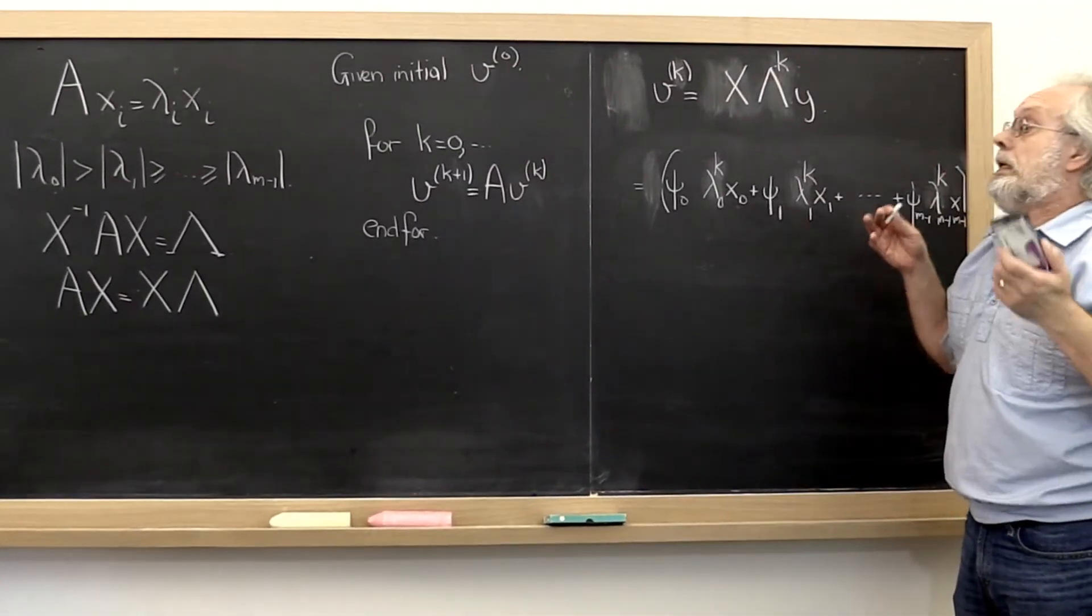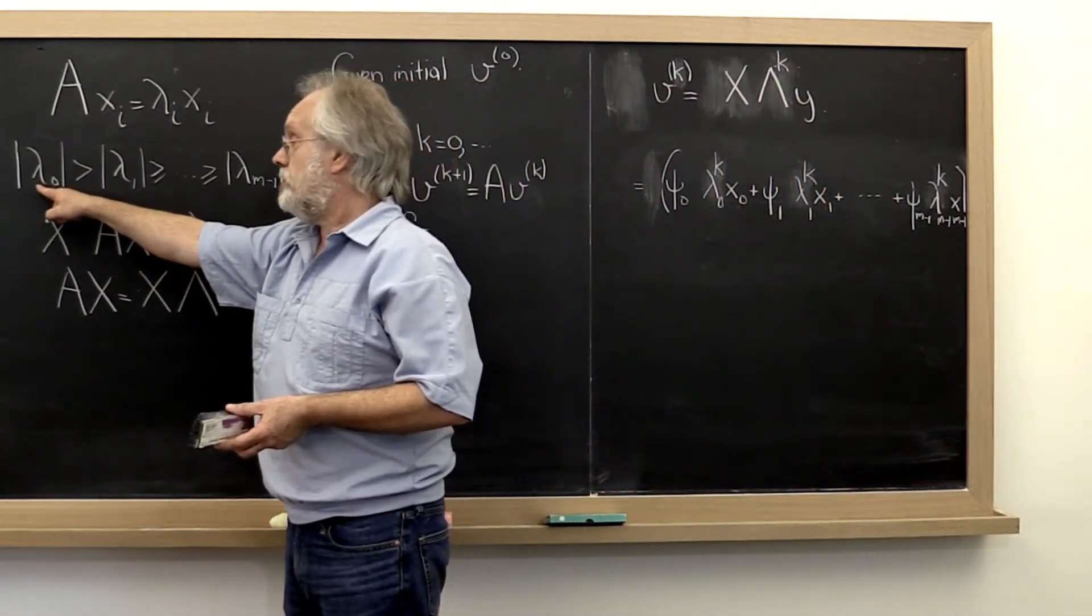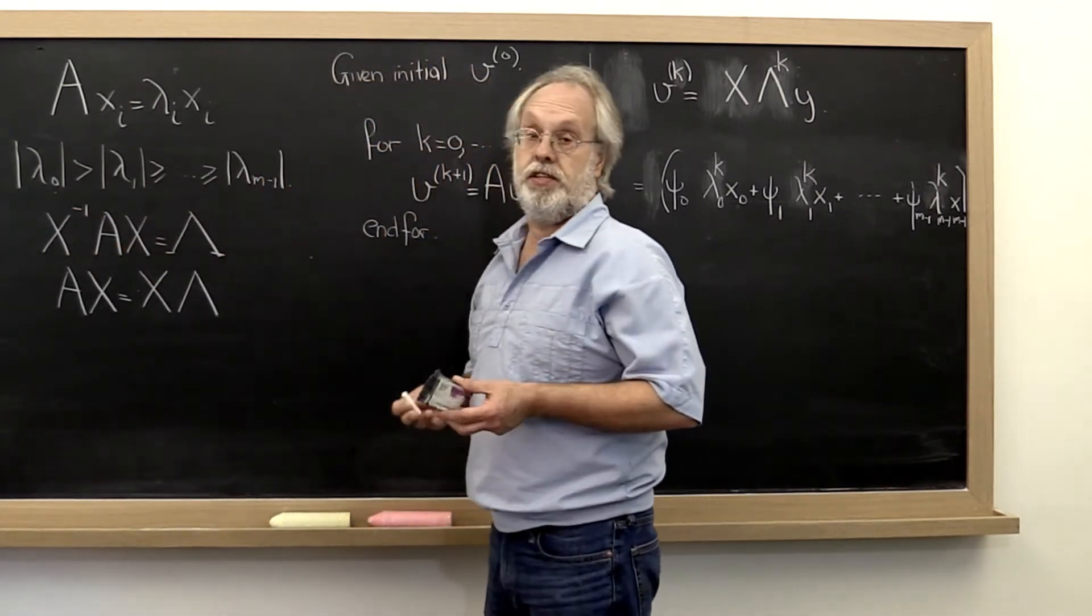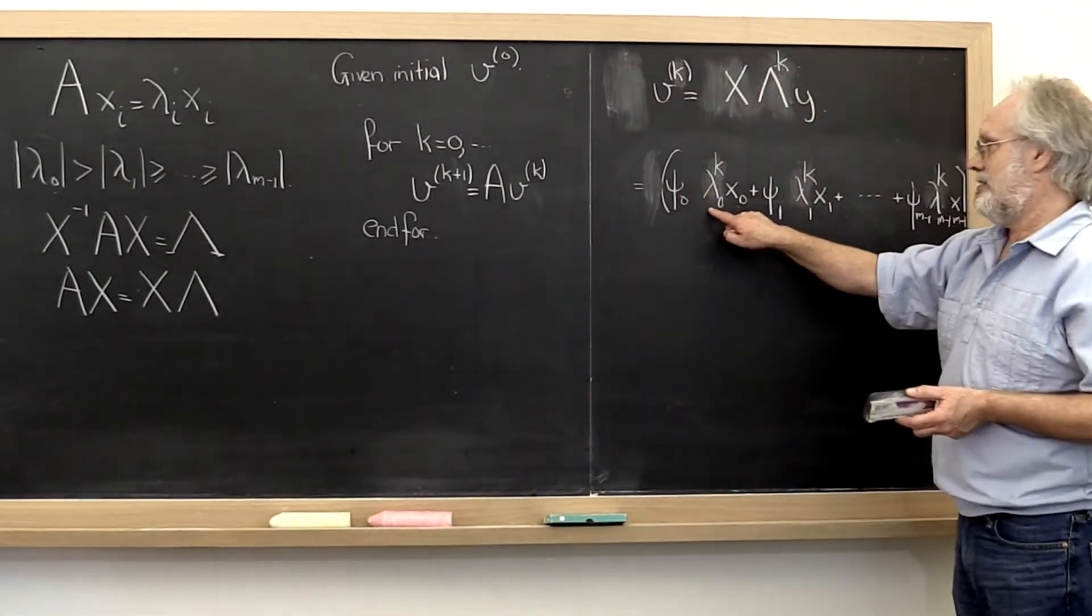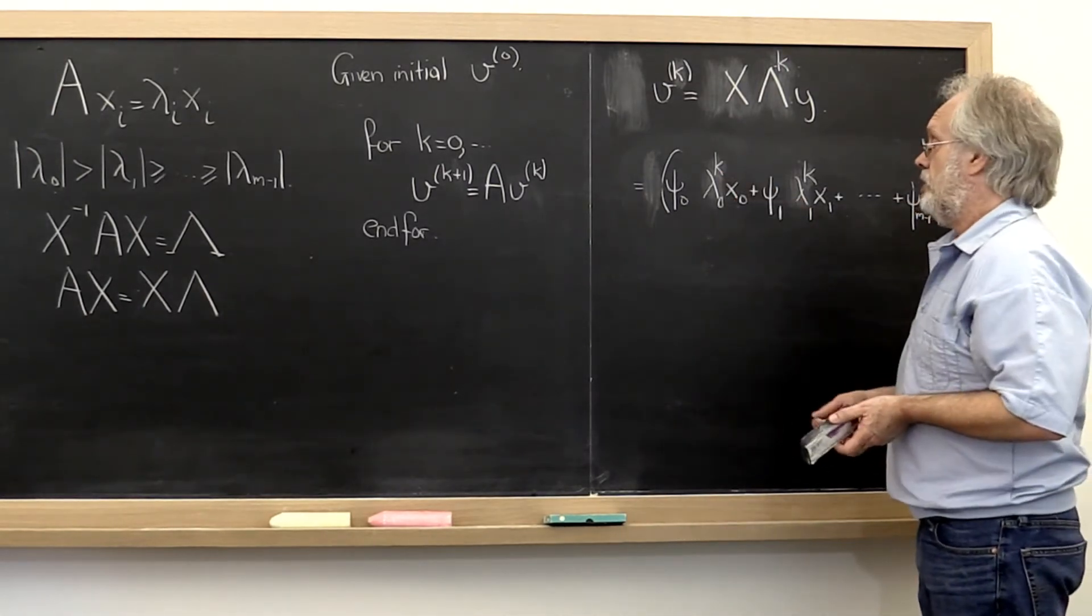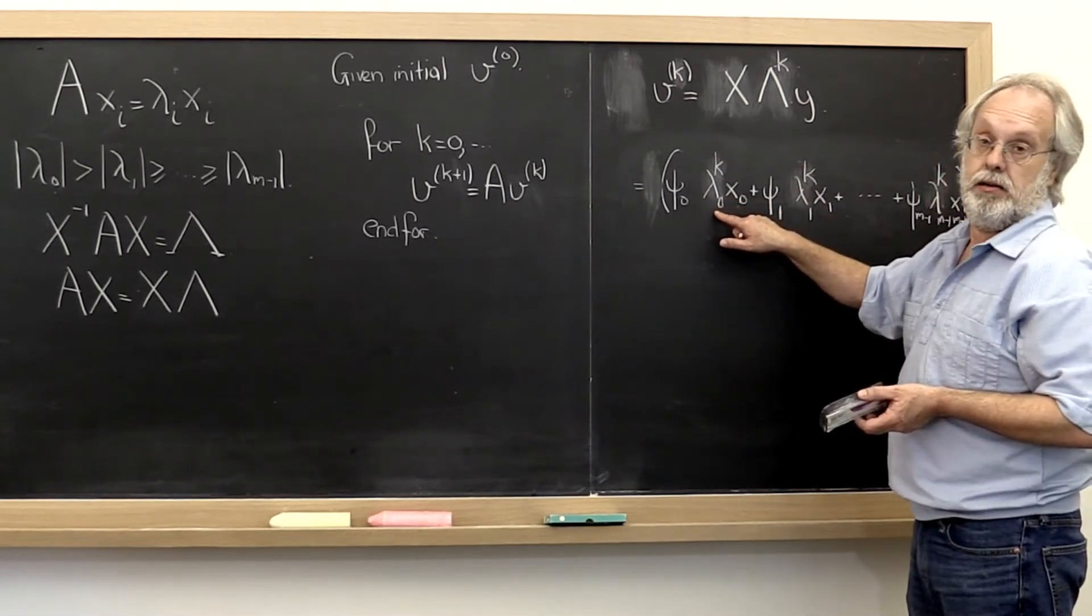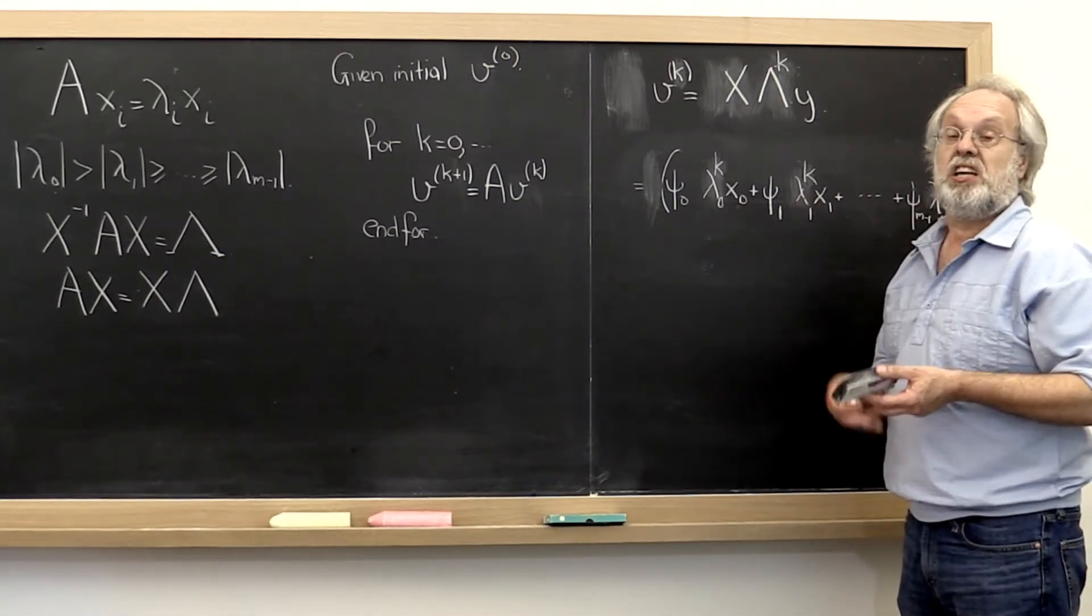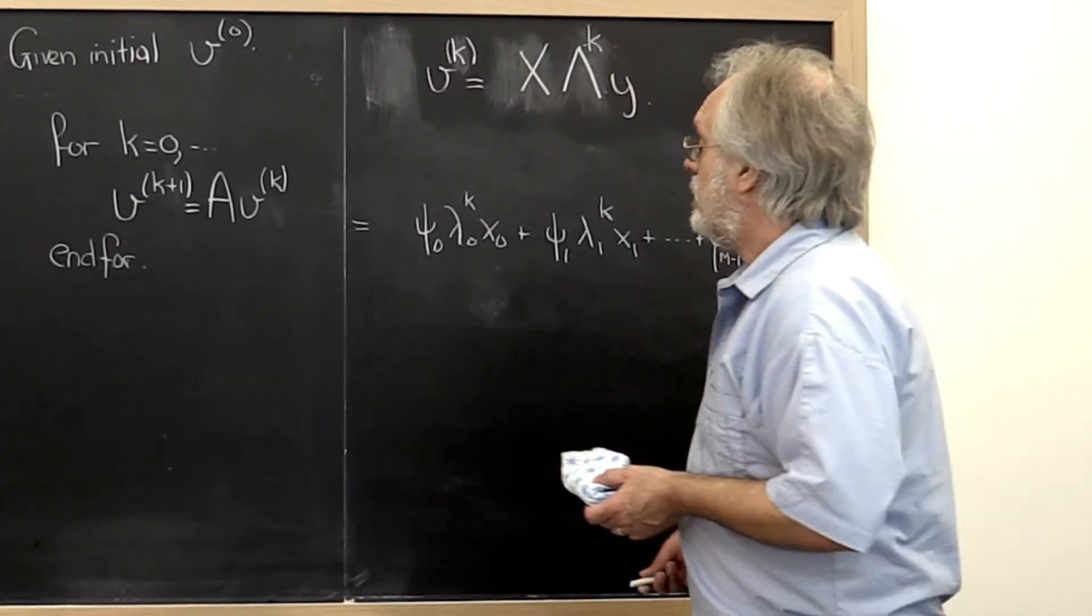Now, notice that we started by saying that the magnitude of lambda 0 is greater than the magnitude of all of these other eigenvalues. What that means is that as k goes to infinity, as we keep doing this iteration, this term is going to end up dominating. And all of the other terms are going to be inconsequential by comparison.